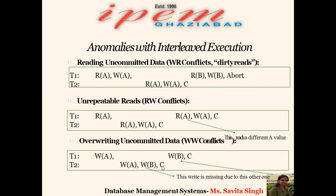The second anomaly is read-write conflict. Transaction T1 reads value A. Then T2 reads A, modifies it (say adds 100), and commits. Now if T1 reads A again, it gets a different value than in its first read. This type of problem — where a transaction reads different values of the same object — is called a read-write conflict.